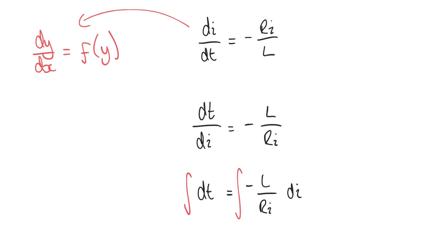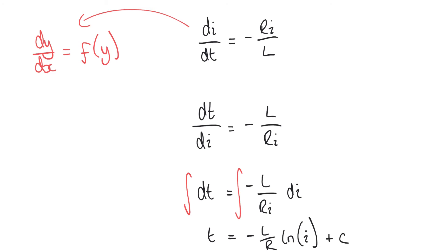Now we can integrate both sides. On the left, integrating dt is the same as integrating 1 with respect to t, giving t. On the right, integrating −L/(Ri) with respect to i gives −(L/R) · ln(i). Not forgetting to add the unknown constant +c, since we've performed an indefinite integration.